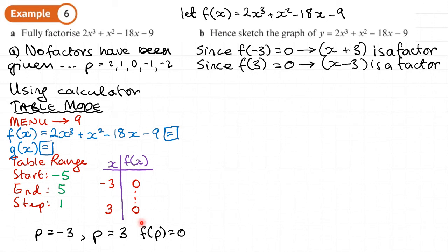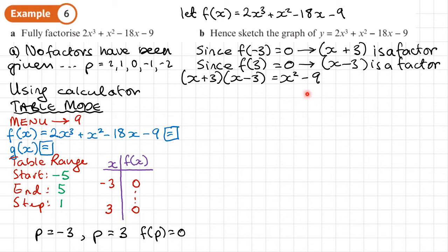Let f of x equal 2x cubed plus x squared minus 18x minus 9. Since f of negative 3 equals 0, that means x plus 3 is a factor — not x minus 3. It's always x minus whatever p is, so x minus negative 3 is x plus 3. And since f of 3 equals 0, x minus 3 is a factor. Now those aren't all the factors — multiplying them together using the difference of two squares gives x squared minus 9. We'll divide the polynomial by this quadratic using long division to find the remaining factor.